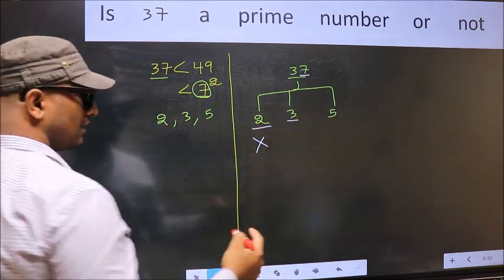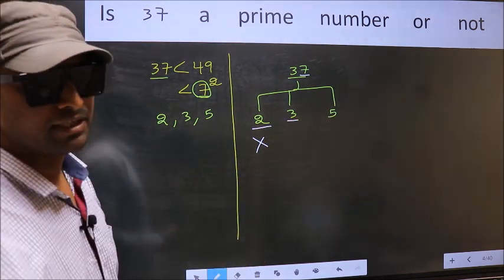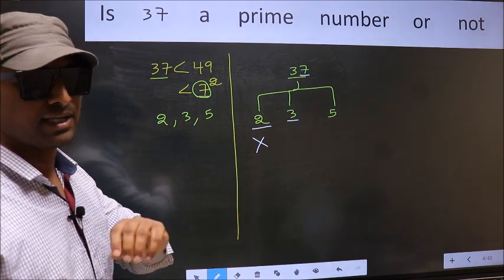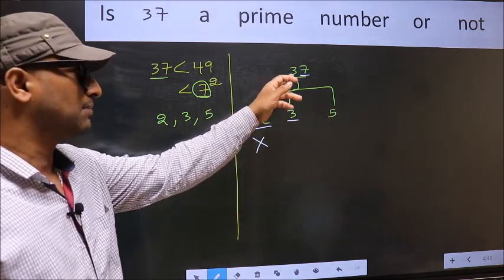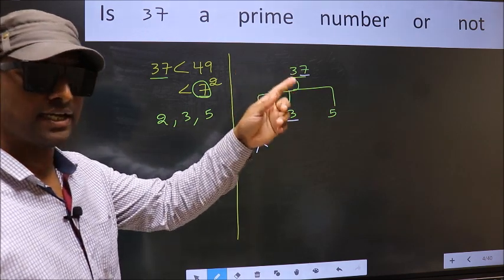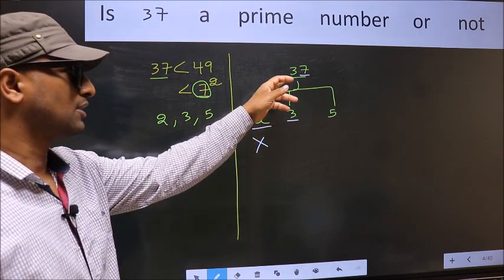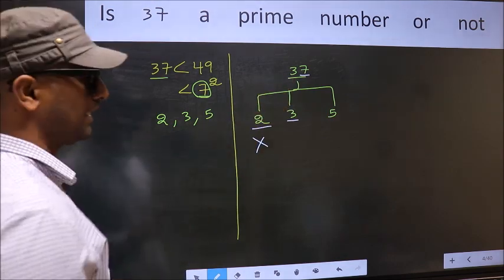Next with 3. To check divisibility by 3, we should add the digits. What I mean is 3 plus 7, we get 10. And 10 is not divisible by 3, so this number also not divisible by 3.